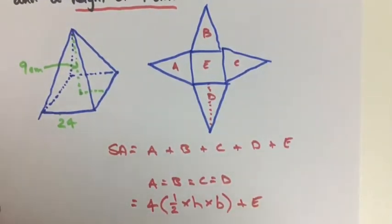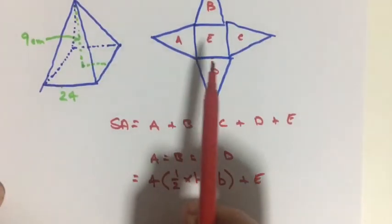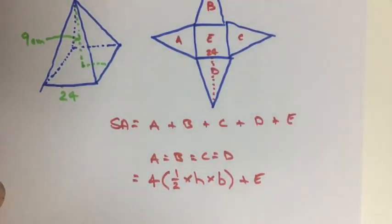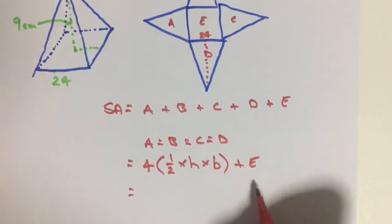Now right away we can tell that the area of the base will be 24 times 24, and 24 squared is going to be 576.